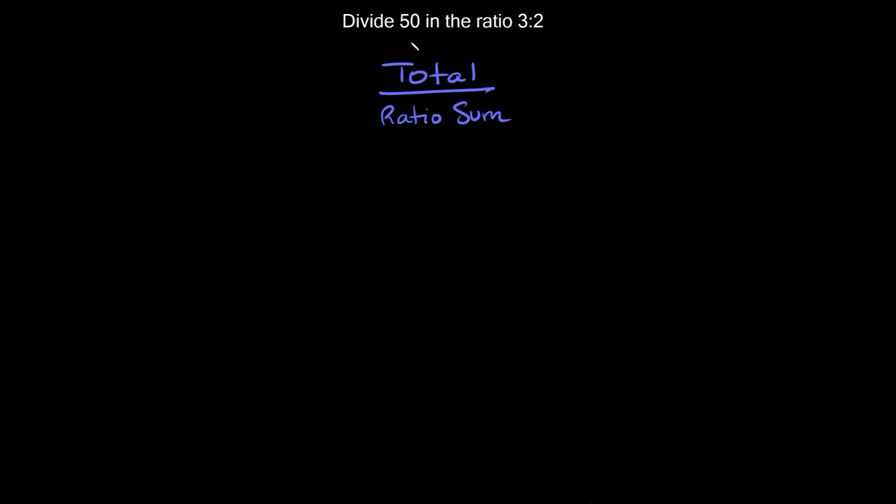In order to divide a number into a given ratio, you can just use this little formula right here. Basically you take the total number that you're given, so in this case that would be 50, and you divide that by the ratio sum. So basically just add the ratio together, which here 3 plus 2 is equal to 5.